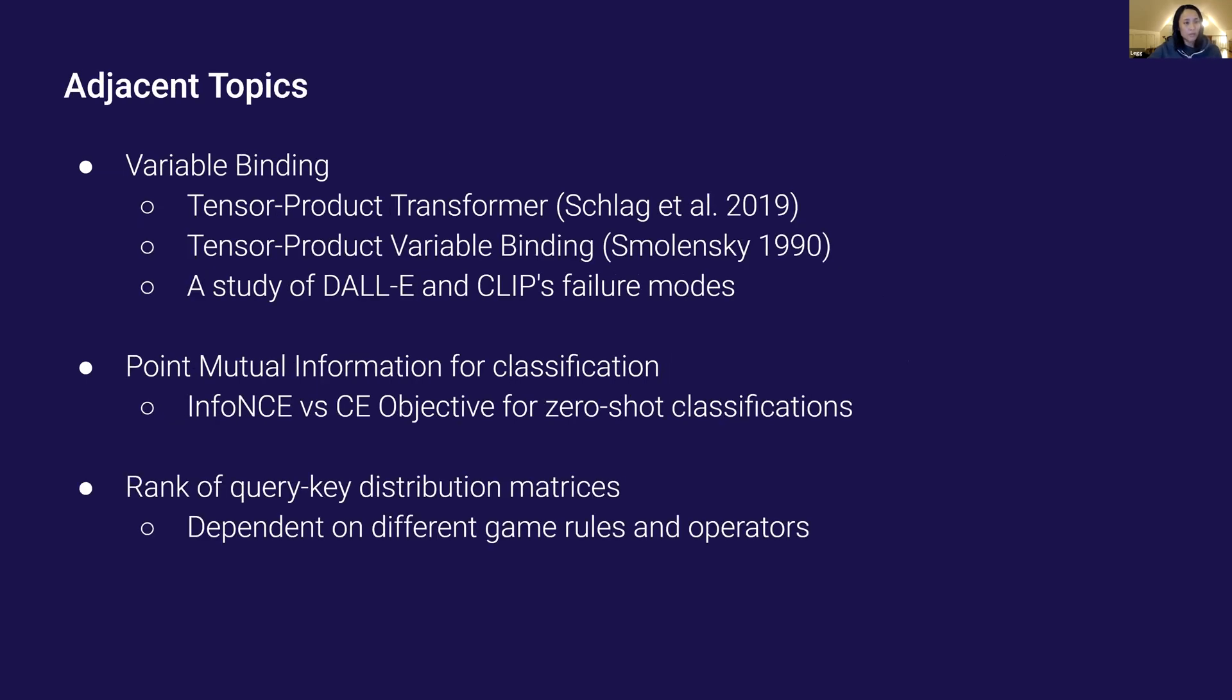Besides what I just told you, I also worked on some adjacent topics during the past six months. They include variable binding, in which I did some literature reviews on tensor products, and a study of DALL-E and CLIP's failure modes. And then I looked at pointwise mutual information for classification, specifically comparing the InfoNCE versus the cross-entropy objective for zero-shot classification on toy problems. And I looked at various versions of game rules and operators and observed that the rank of their query key distribution measures these changes.